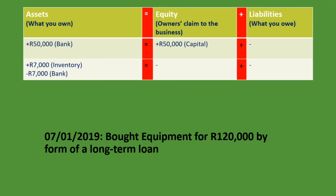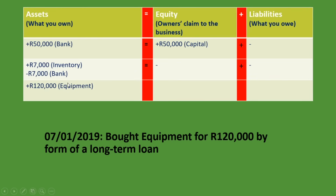On the 7th of January, we bought equipment for 120,000 rand using a long-term loan. Equipment is an asset, so we put plus 120,000 rand on the asset side. A loan is something we owe, so it's a liability — we put plus 120,000 rand on the liability side. Assets still equal equity plus liabilities, with 120,000 rand on each side and nothing in equity for this transaction.